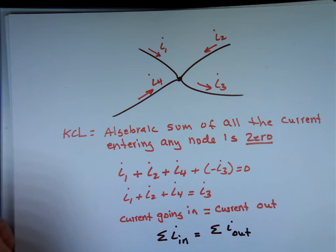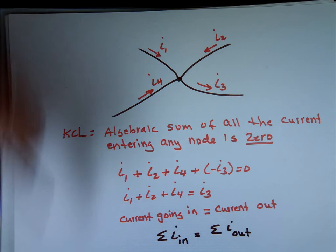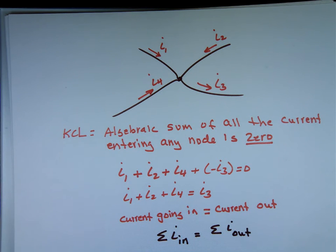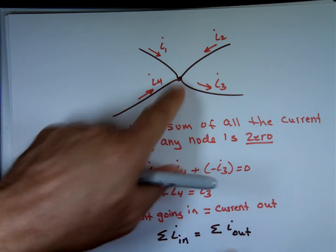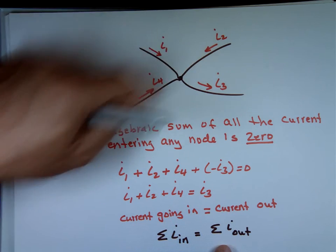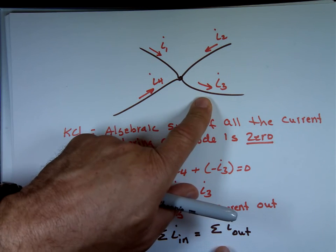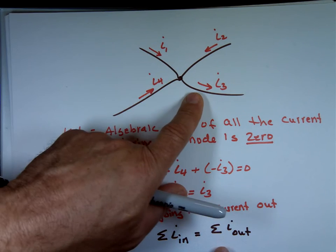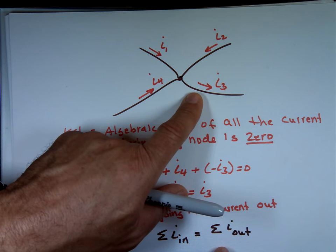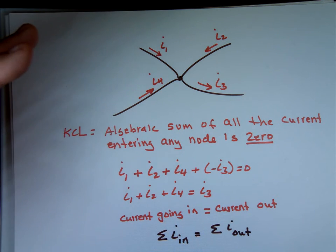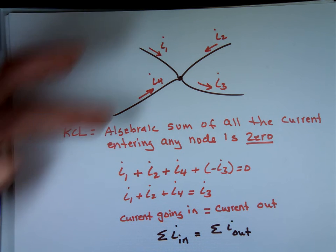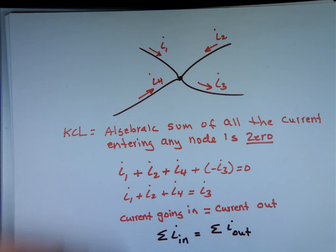All the current going into the node should equal all the current leaving that node. The way I like to write KCL: sum of currents going in equals sum of currents coming out — I don't want to deal with minuses and pluses, so: in equals out. Think of current as water: if you have hoses coming into a junction, whatever water comes in has to equal the water going out, otherwise the hose will balloon up and explode. Whatever goes in has to equal whatever comes out — that's KCL.